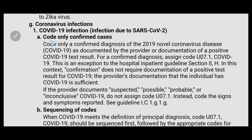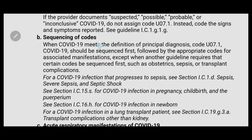For coronavirus infections, the first guideline is to code only confirmed cases. The code for confirmed diagnosis of COVID-19 is U07.1. If the documentation mentions suspect, probable, or possible, do not code U07.1. Use U07.1 only when COVID-19 is confirmed.